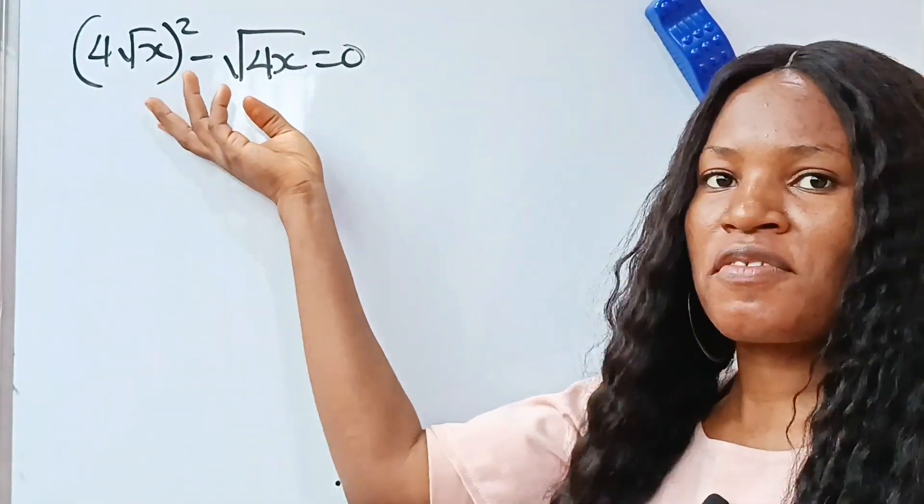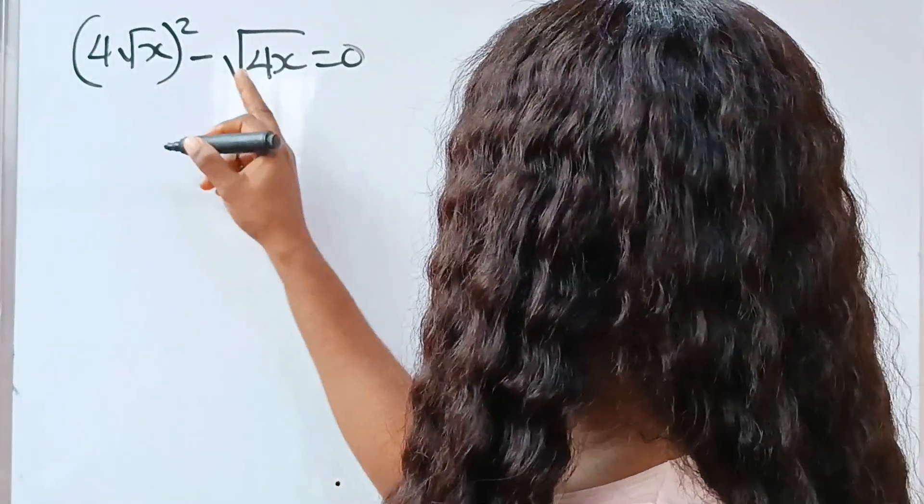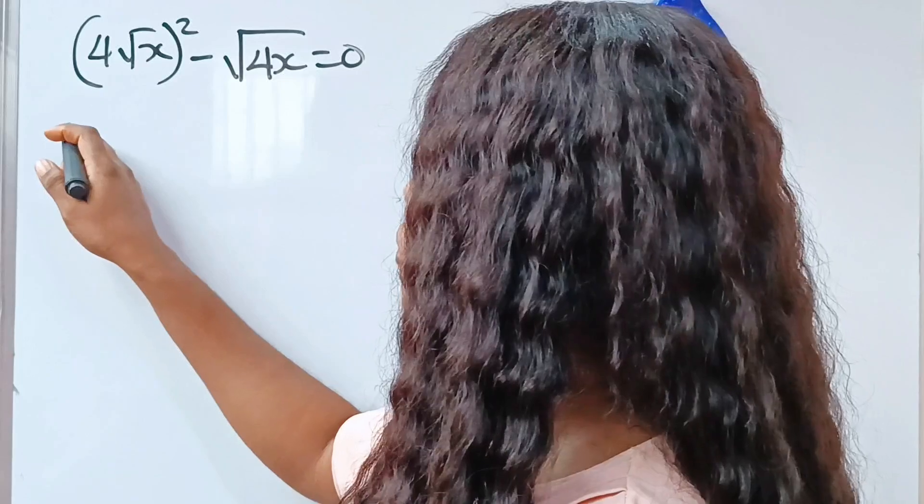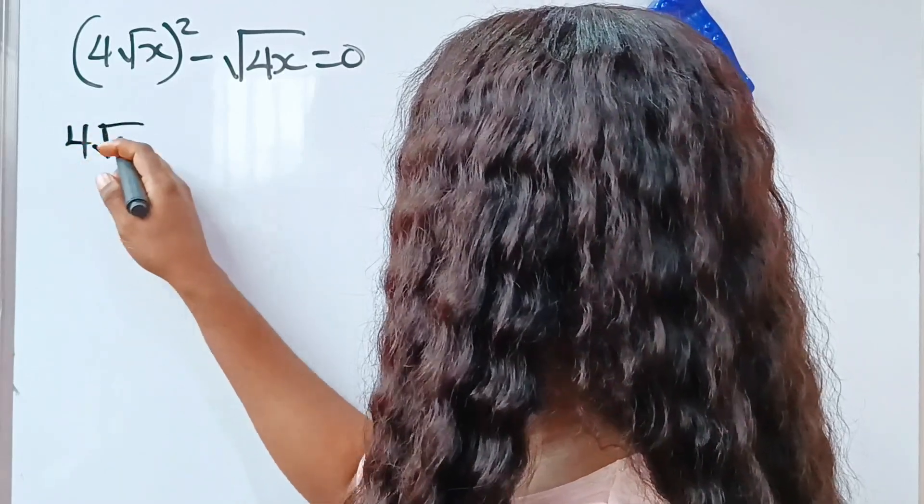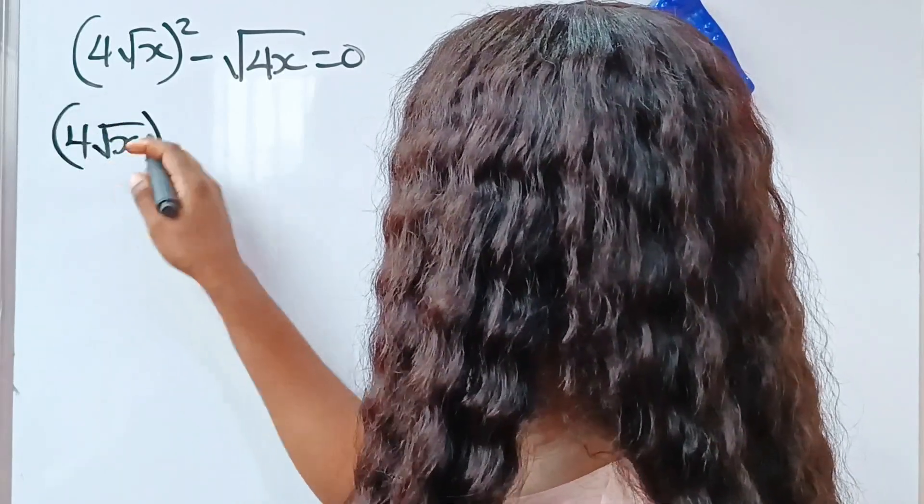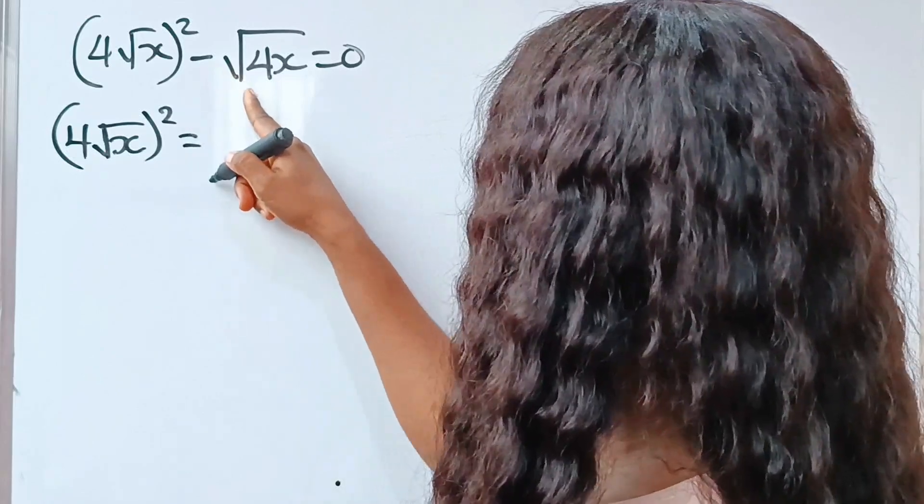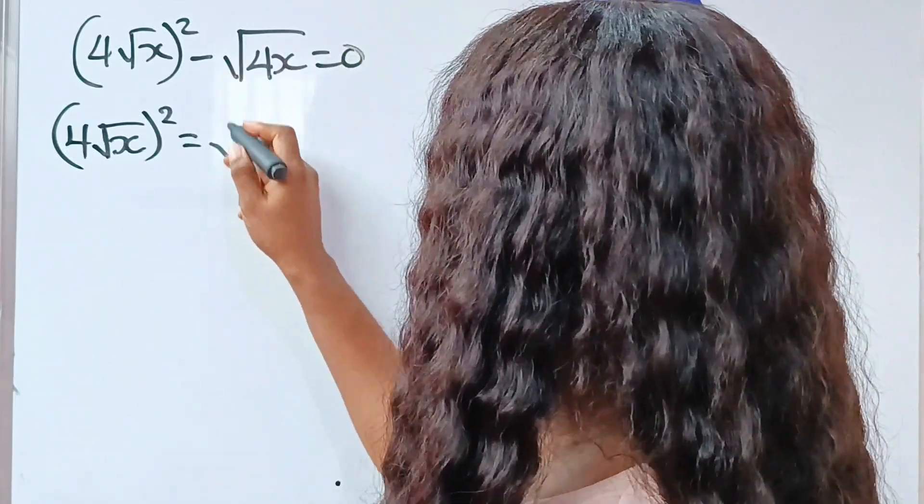Let's quickly get the values of our x. So let's transfer this to the other side of the equation. If we do that, we have that 4 root x all squared is equal to minus square root of 4x we cross to become square root of 4x.